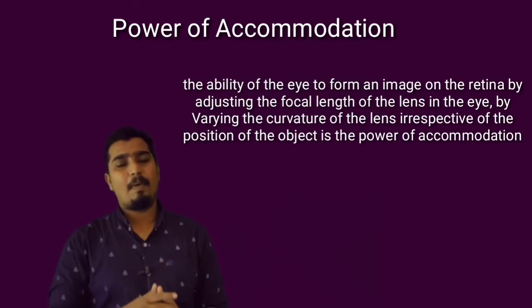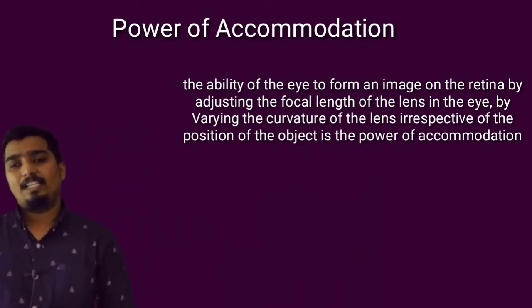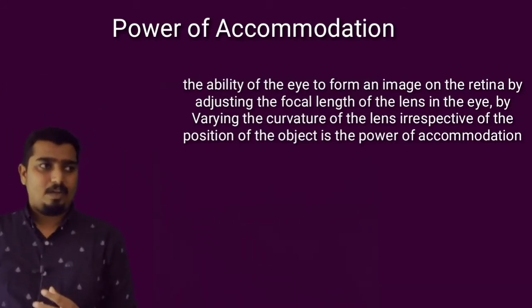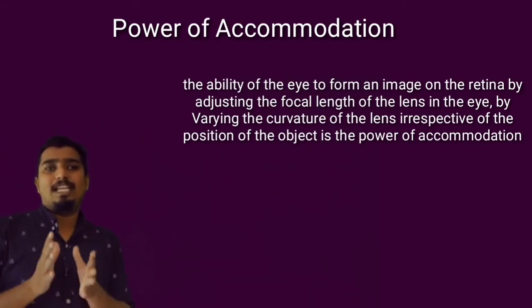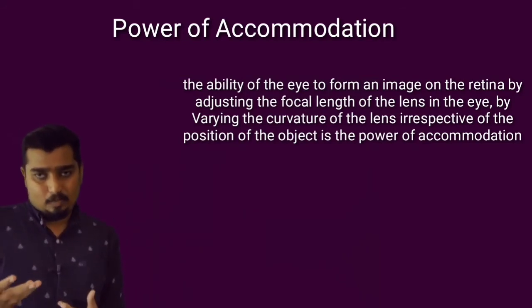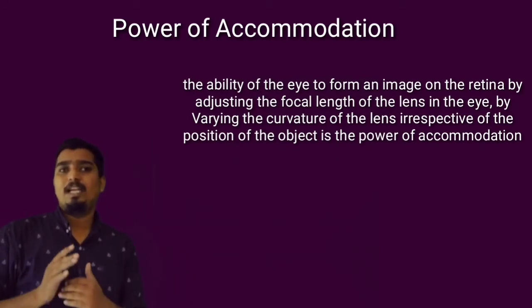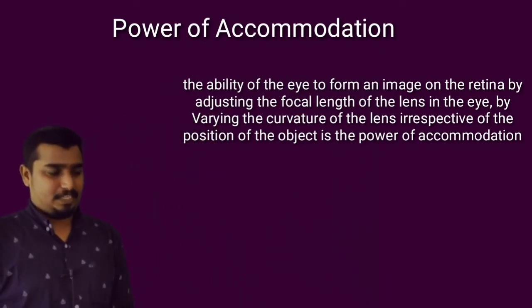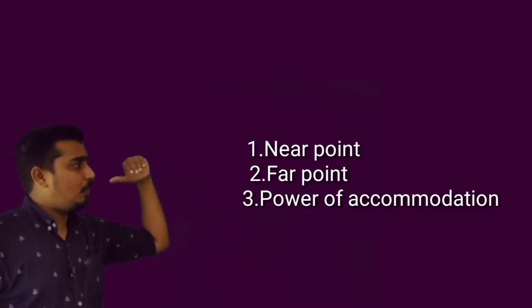The power of accommodation is the ability of the eye to form an image on the retina by adjusting the focal length of the lens — by varying the curvature of the lens — irrespective of the position of the object.